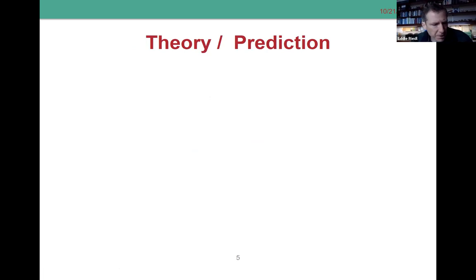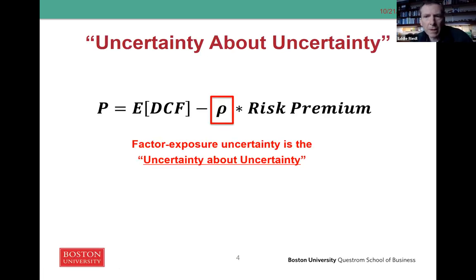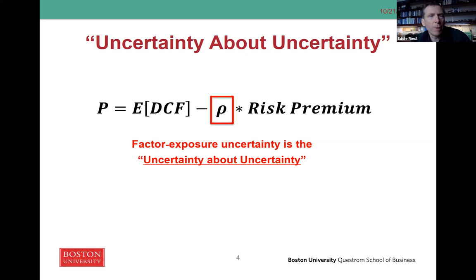Part of the policy implications we're thinking about is understanding the disclosure environment surrounding risk, which is a little different from the environment around traditional financial reporting topics. One of the ways we're thinking about the implications of this paper is that it may help inform regulators — the SEC — to think about the best way to structure information in the risk domain to allow investors to understand what exposures a company faces.